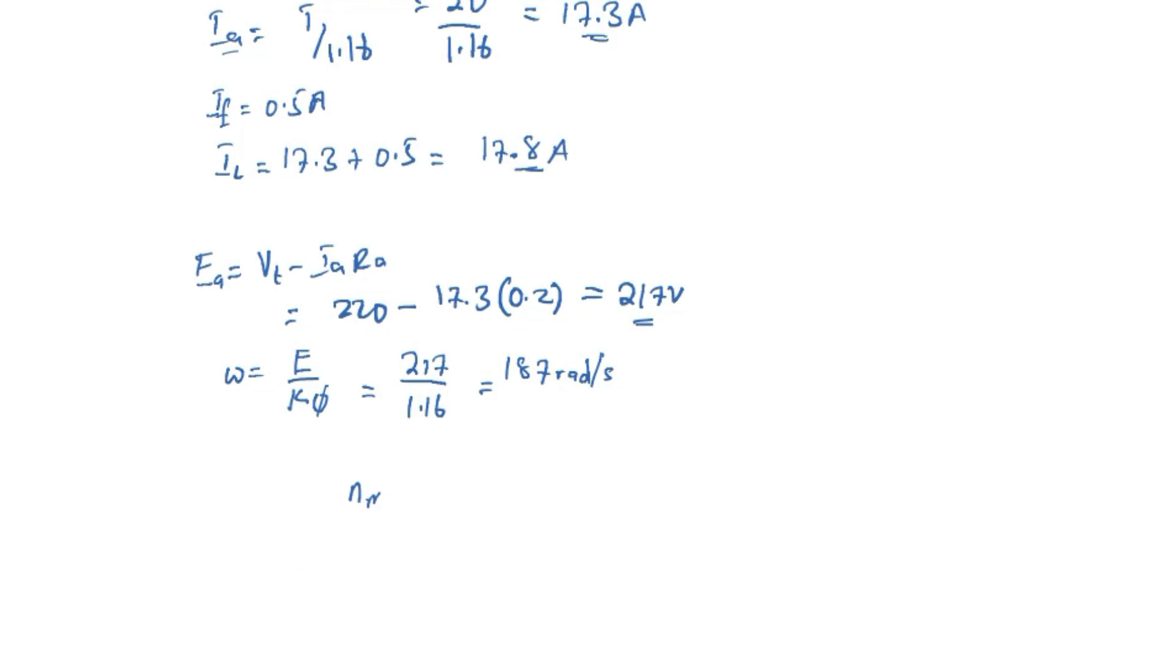We can convert this speed from rad per second to RPM. That is, you multiply omega by 60 and divide by 2 pi. Do this and you are going to have 1790 RPM.